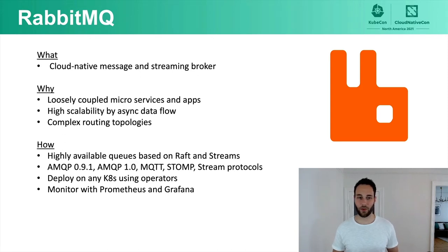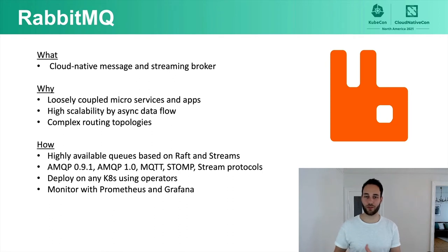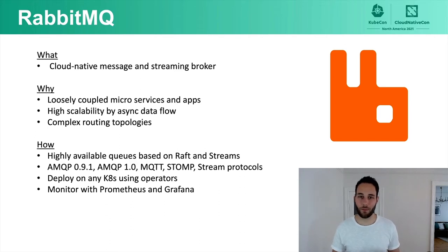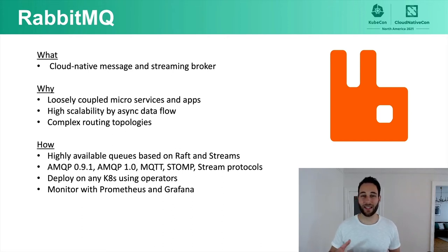RabbitMQ is a cloud-native message and streaming broker. It's an architectural pattern that achieves loose coupling — your producer and consumer applications don't even need to be aware of each other, and you can deploy, upgrade, and version those applications independently. You can also have producers send messages while your consumers are down. RabbitMQ provides very high scalability through asynchronous data flow, acting as a temporary buffer for messages. It handles very high throughput because it's written in Erlang and runs on the BEAM virtual machine, which is based on the Actor model — a language designed for messaging systems.